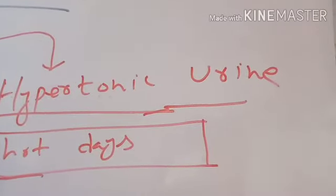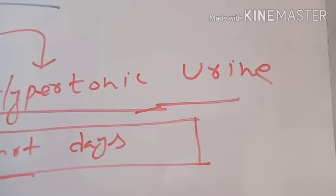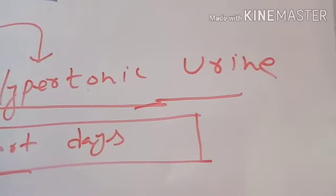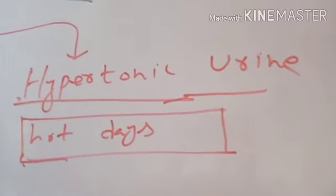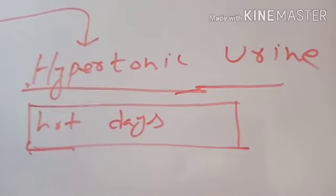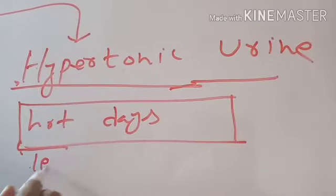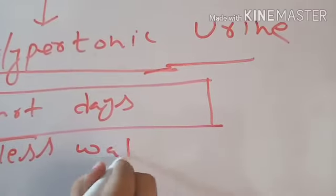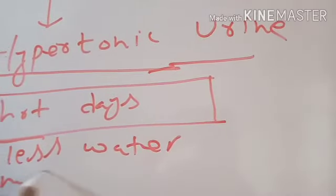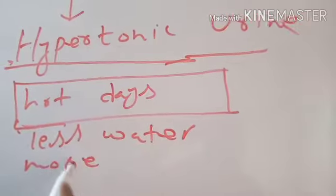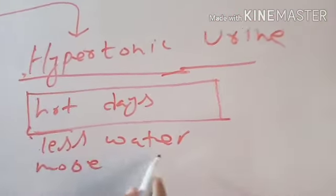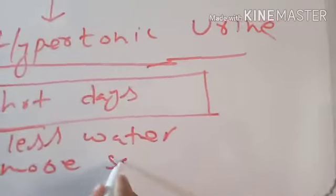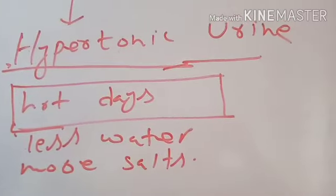So in hot days kidneys form hypertonic urine, the urine which contains less water but more salt. Hypertonic urine means the urine which contains less water and more salts. It is made to conserve the water.